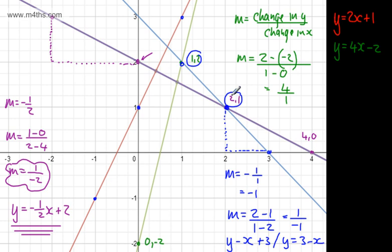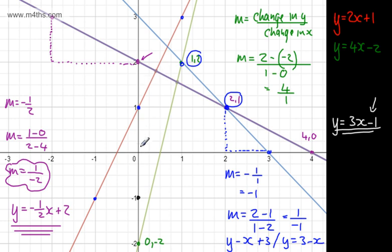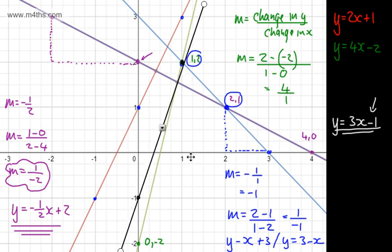Drawing a new line y = 3x - 1: y-intercept at -1, gradient of 3, going up 3 for every 1 across. Plotting these points and drawing through them gives the line. Generally, when we put an equation on a graph we label it. This is part of the graph of y = 3x - 1, with gradient positive 3 and y-intercept -1.